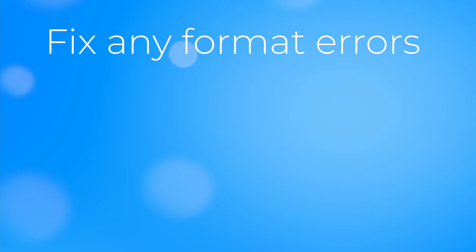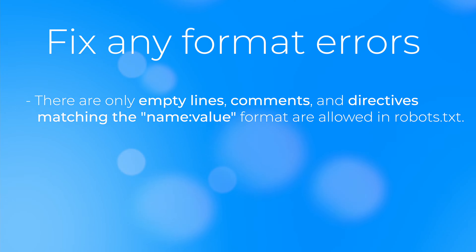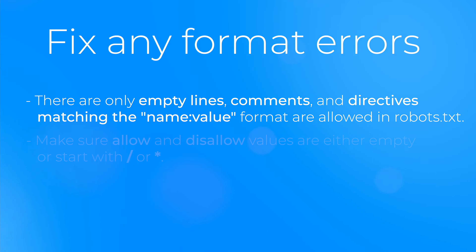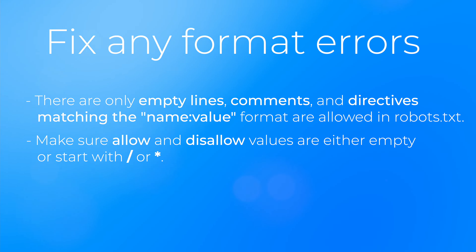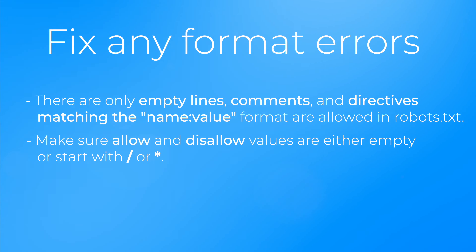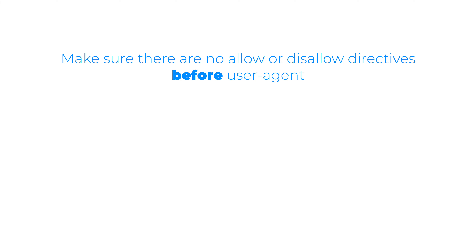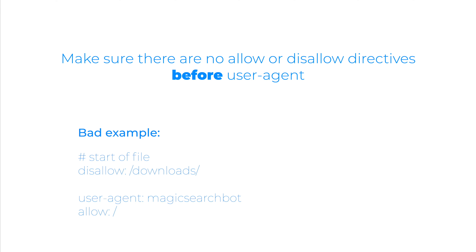Second, fix any format errors. There are only empty lines, comments, and directives matching the name: value format allowed in the robots.txt file. Make sure allow and disallow values are either empty or start with a slash or asterisk. Also, don't use a dollar sign in the middle of a value. Make sure there are no allow or disallow directives before the user agent. Here is a bad example — in this case, no search agent crawlers will read the disallowed downloads directive.